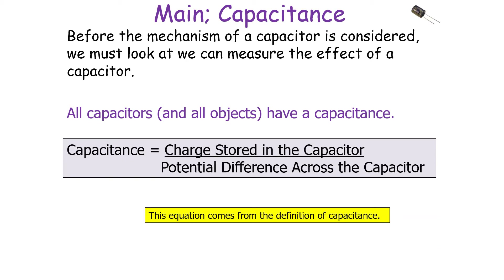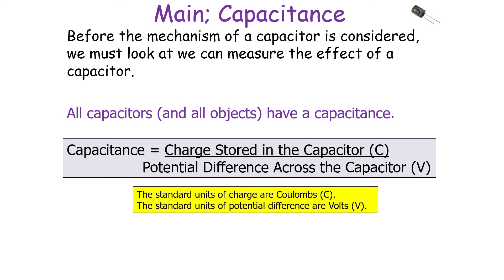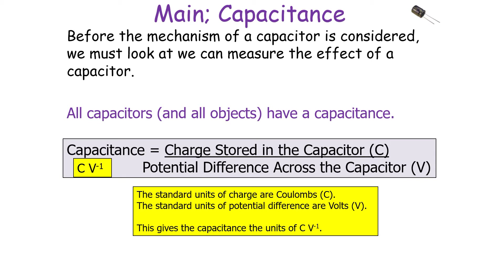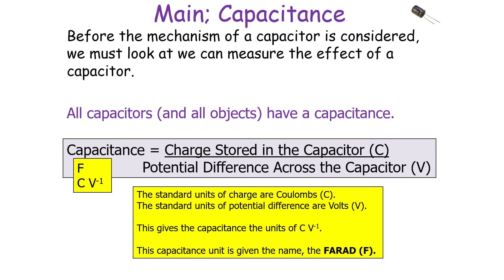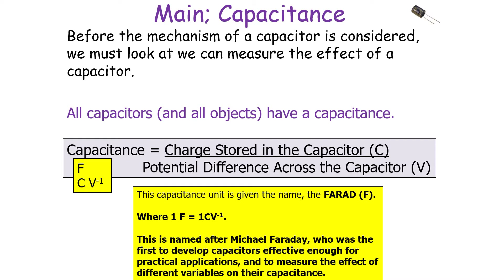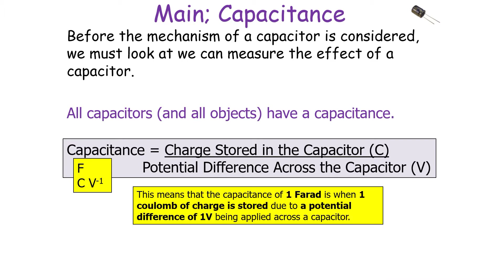Capacitance is equal to the charge stored in the capacitor divided by the potential difference across the capacitor: C = Q/V. The units of charge are Coulombs and the units of potential difference are volts, so the units of capacitance are Coulombs per volt. Another name for this unit is the Farad — one Farad equals one Coulomb per volt. This is named after Michael Faraday, who was the first to develop capacitors effective enough for practical applications and to measure the effect of different variables on their capacitance.